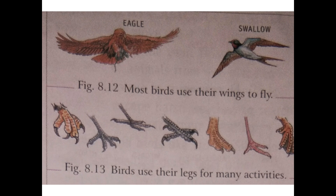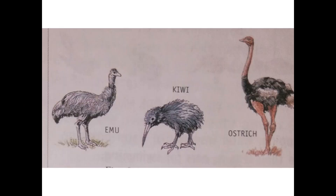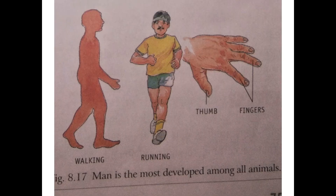Birds can use their legs for different purposes like catching prey, attacking enemies, and scratching the ground. Different birds have different kinds of claws as shown in the picture. Some birds have weak wings and are not able to fly — such birds are called flightless birds. Examples are emu, kiwi, and ostrich.